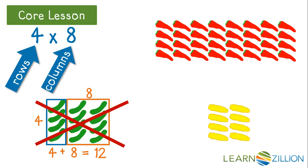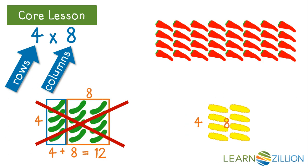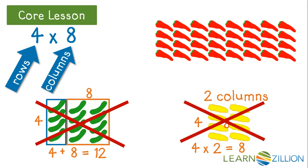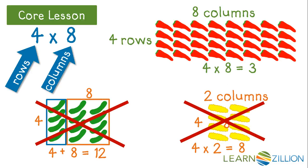How about the corn array? This array has four rows, but there are only eight corn total with only two columns. The corn shows four times two — four rows with two in each row. It does not match four times eight. How about the red peppers? This array has four rows with eight columns — four rows with eight peppers in each row. That's the correct array for four times eight, and it shows us that four times eight equals thirty-two, because there are thirty-two peppers in the array.